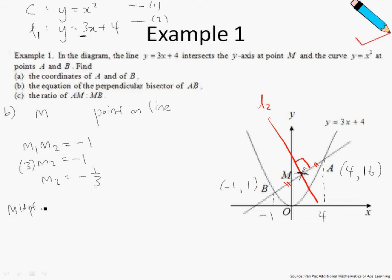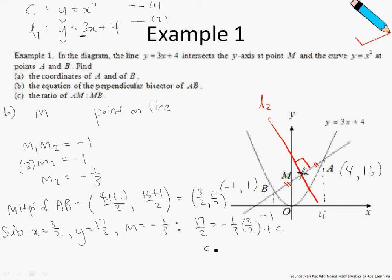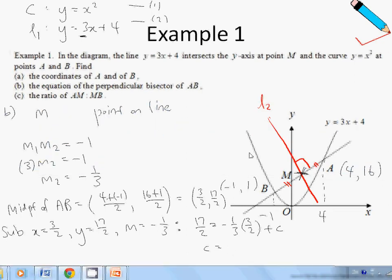The midpoint of AB is given by x_A plus x_B divided by 2, and y_A plus y_B divided by 2. Simplifying this, I get 3 over 2 and 17 over 2. Substituting the gradient of negative one third and the midpoint into y equals mx plus c, and solving this, c is just 9.